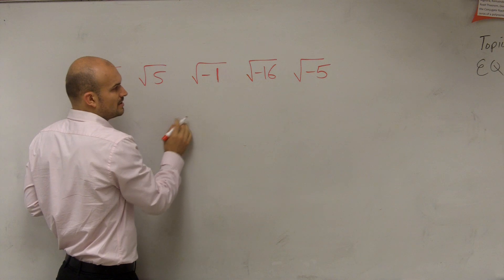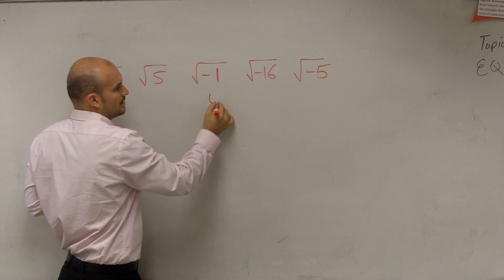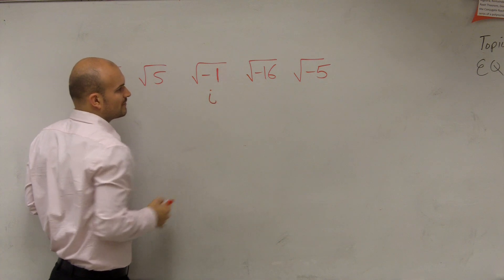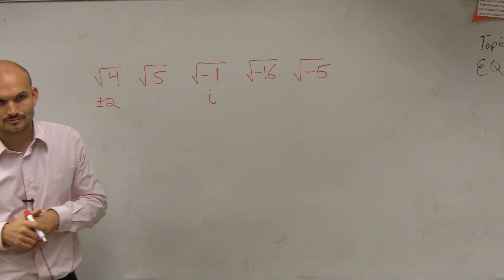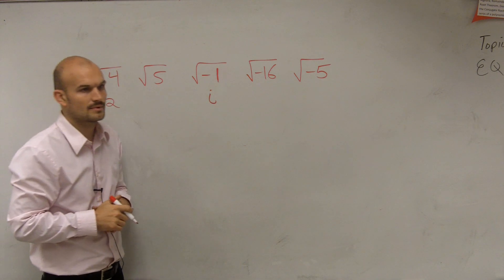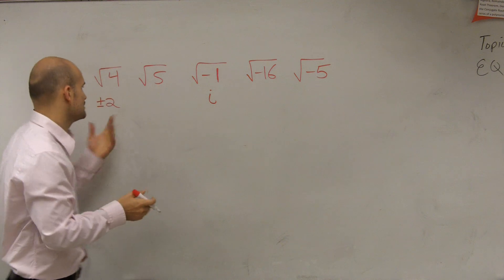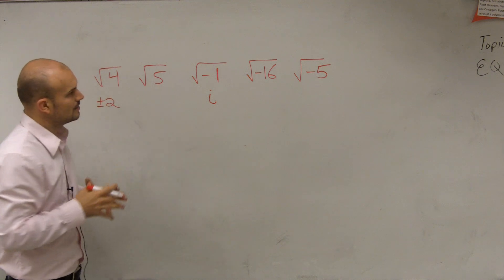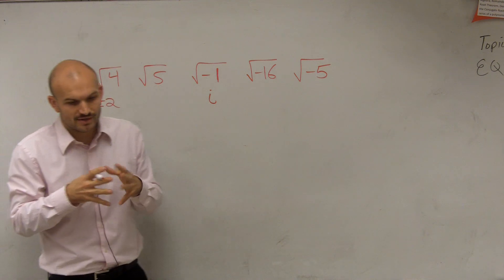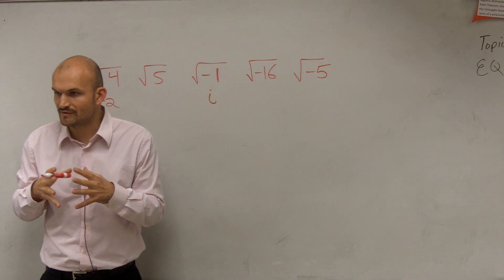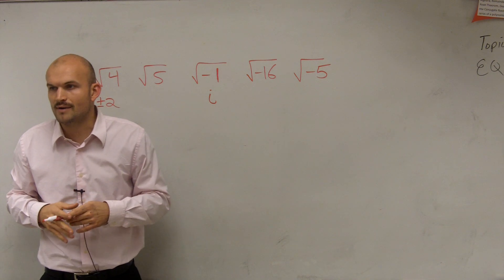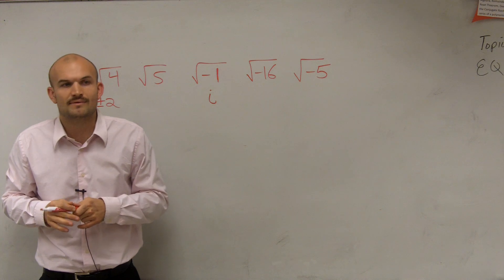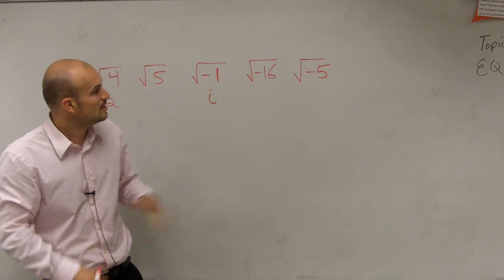We say the square root of negative one is equivalent to i. Now why would that be important?